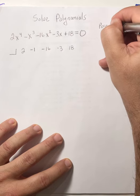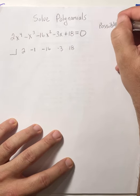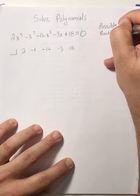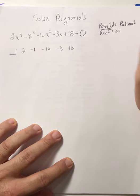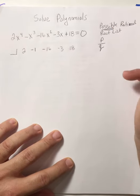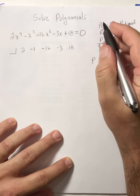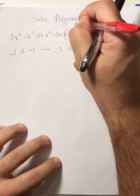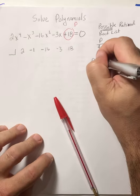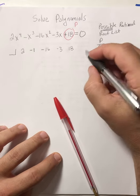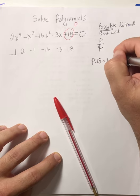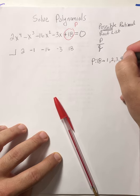The possible rational root list — notice I said possible — is what we call P over Q. What is P? P is the last term, it's our constant. So this right here is the P value. We ignore the sign, so the P value is 18. I need all the factors of 18: 1, 2, 3, 6, 9, 18.